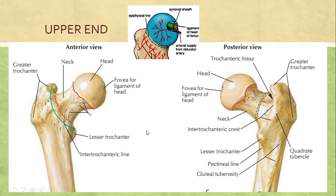The head of the femur is more than two-thirds of a sphere, and it is larger and more spherical than the head of the humerus, which is the homologous bone of the femur. The head is completely covered by articular cartilage, but there is a depression just below the center called the fovea. The fovea is a pit which gives attachment to the ligament of the head of femur, and on the opposite side the ligament is attached on the acetabular fossa, which is the non-articular part.